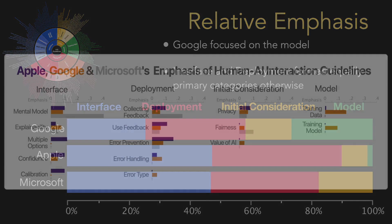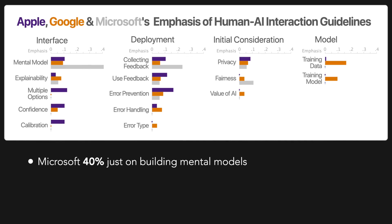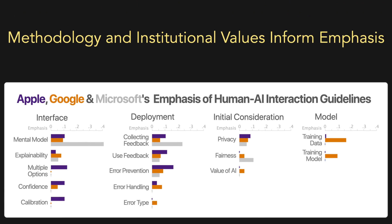Looking at the low-level categories, we found that Microsoft in particular focused on ensuring good mental models and feedback, while Apple focused on areas for smooth user experiences such as error prevention and providing multiple options and calibration. These differences can help us understand the effects of the different methodologies: the more academic style of work tends to emphasize areas of established HCI study such as building mental models, engineering-driven efforts like Google's may focus more on the model side, and an organization's culture and values, such as Apple's focus on user experience, will affect the kinds of guidelines present. These differences only became apparent when surveyed together, showing the need for this kind of comparative analysis.